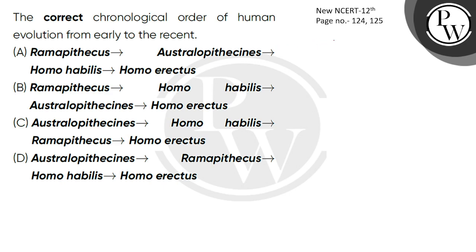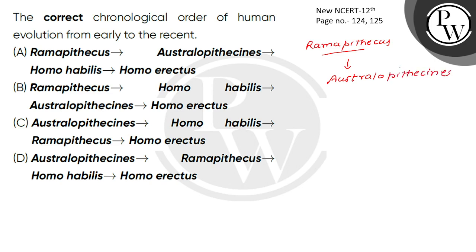First of all, we start with Ramapithecus. Who comes after Ramapithecus? Australopithecus. What do you see in Ramapithecus? They were erect, had small canines, and were more man-like.